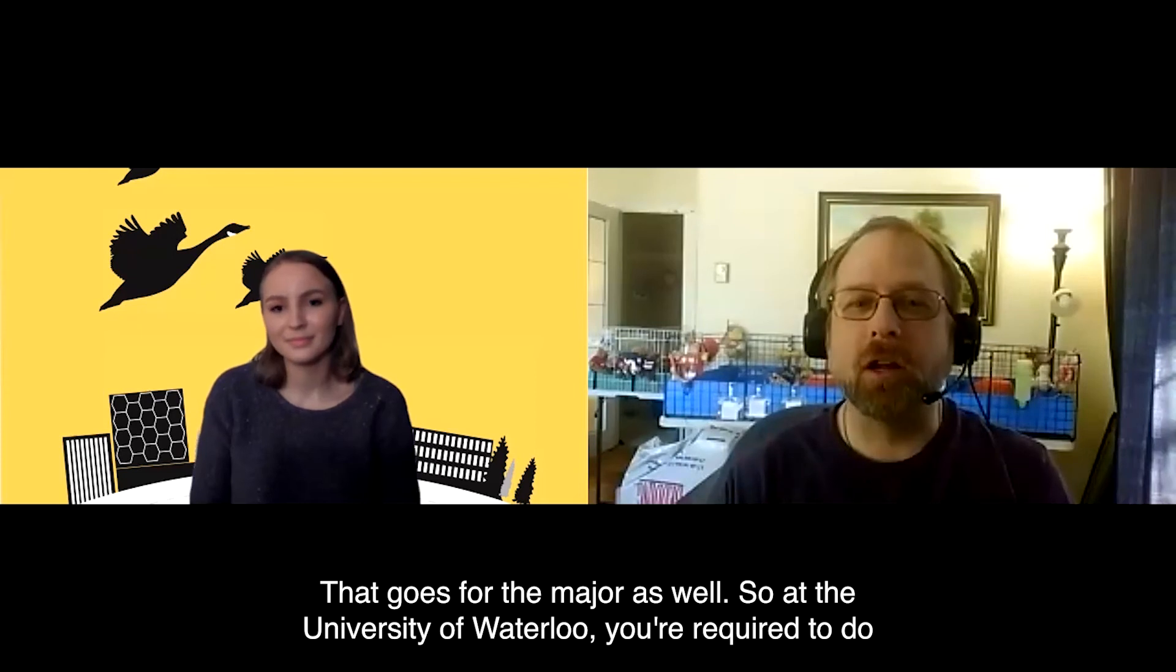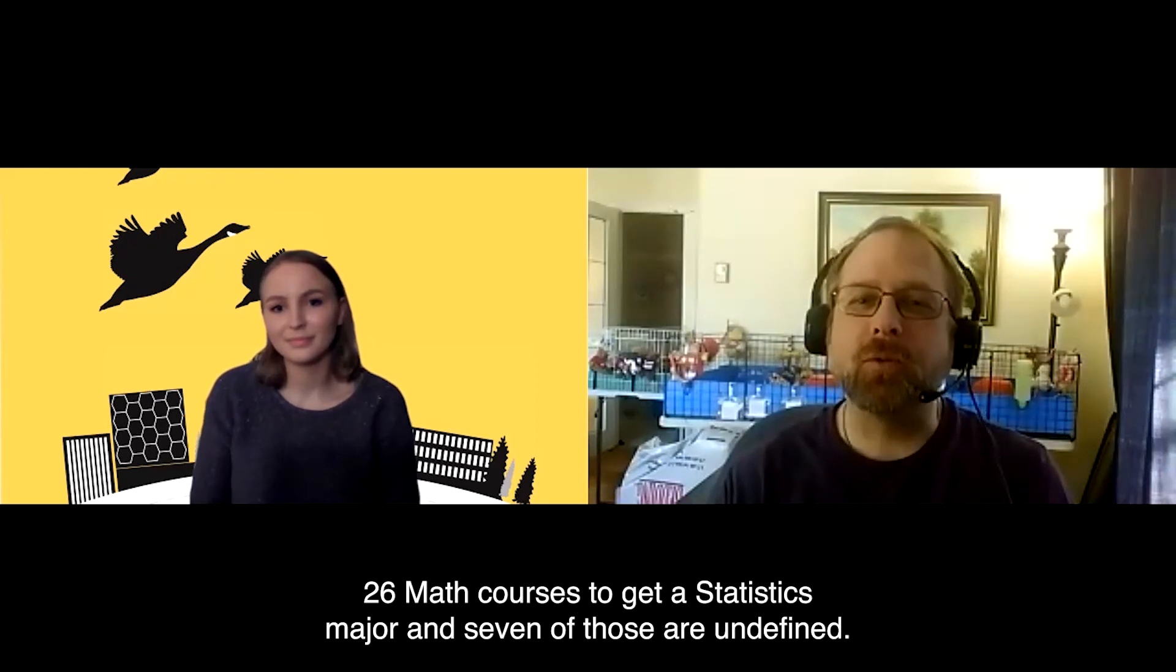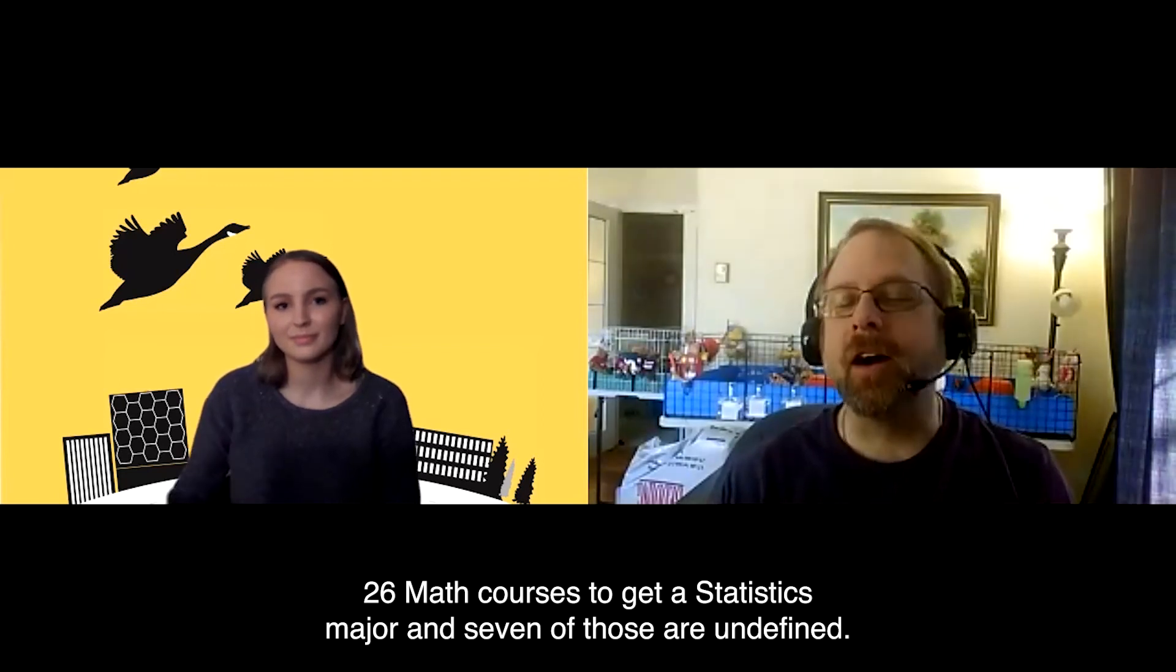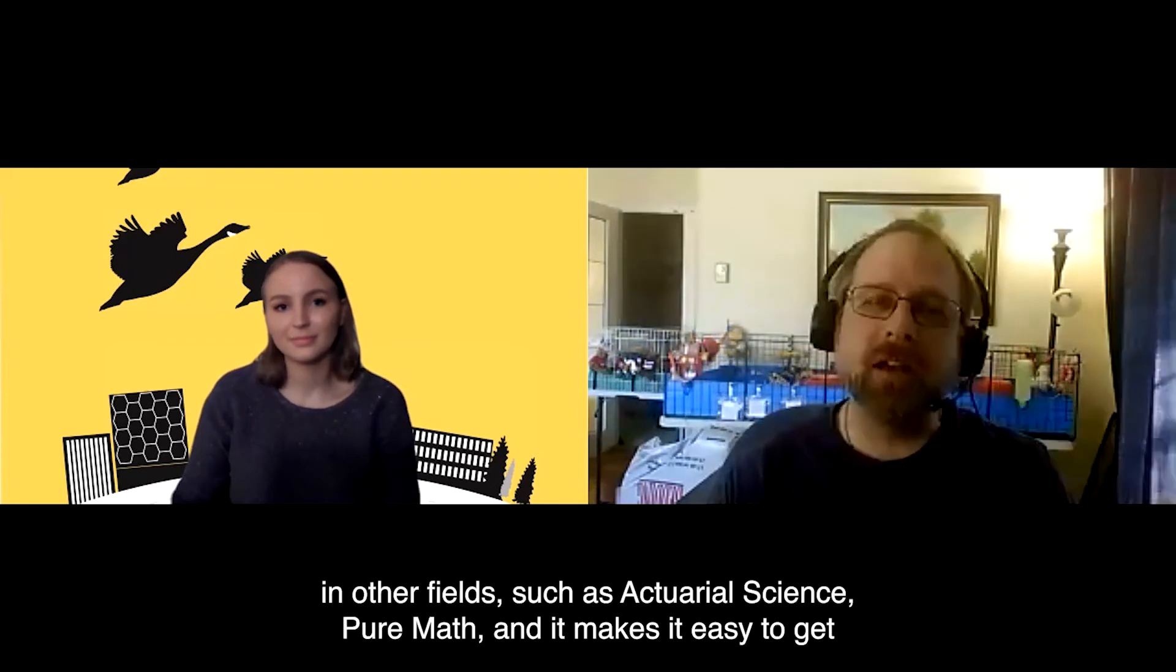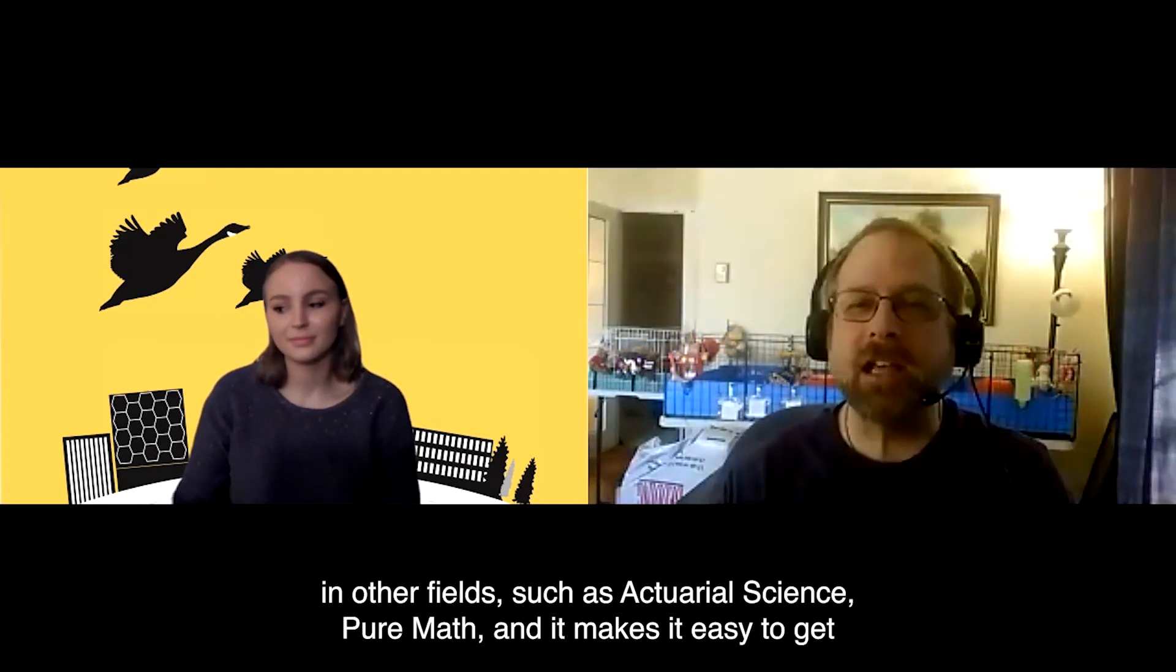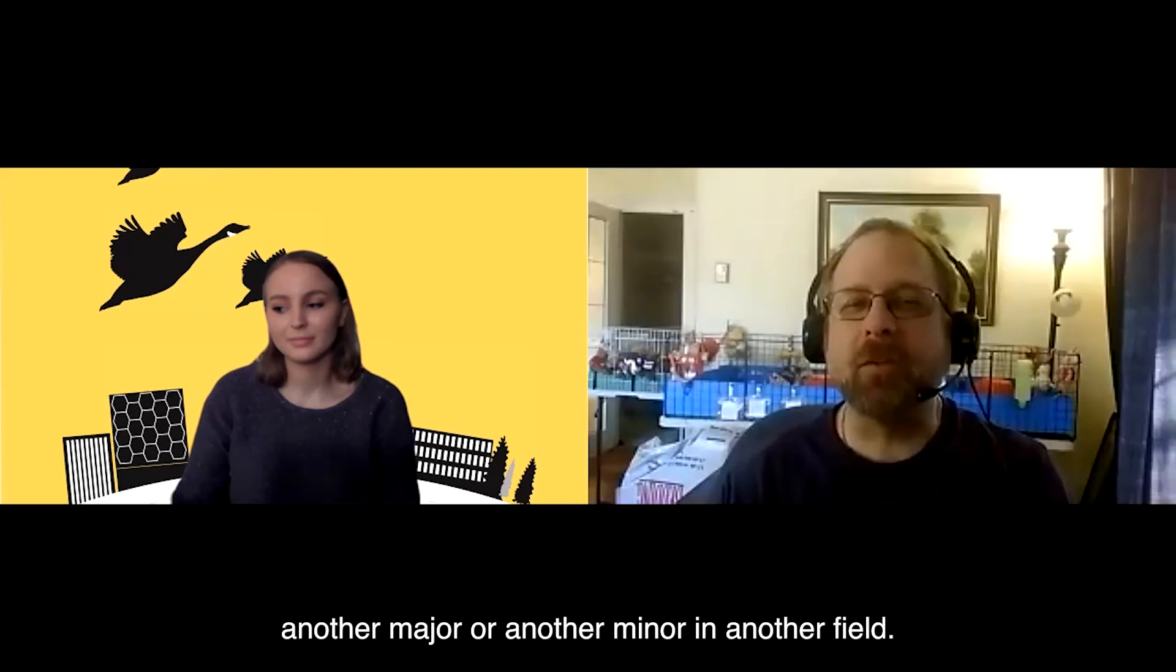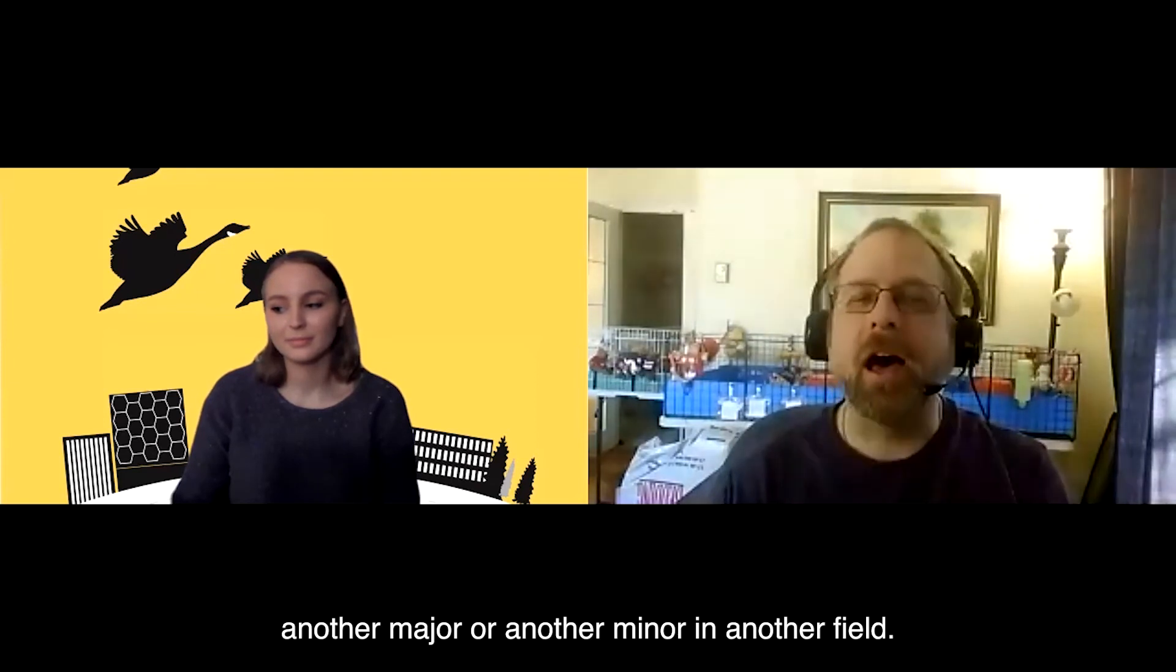So at the University of Waterloo, you're required to do 26 math courses to get a statistics major and seven of those are undefined. So that allows you to pick courses that interest you in other fields such as actuarial science, pure math, and it makes it easy to get another major or another minor in another field.